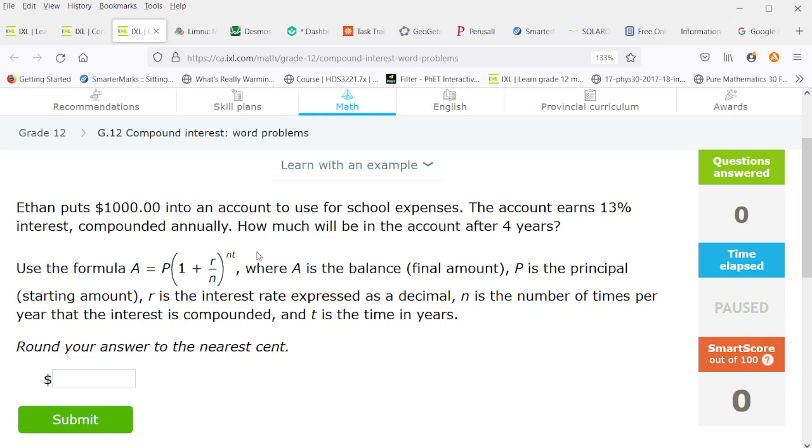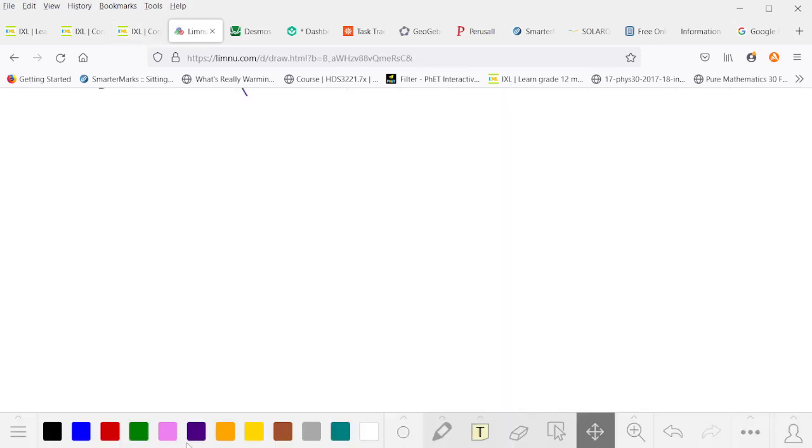So Ethan puts a thousand dollars into an account to use for school expenses. The account earns 13% interest compounded annually. How much will be in the account after four years? If you use this formula, let's break it down. The amount is the principal times one plus the interest rate over the number of compound periods per year, exponent number of compound periods per year times the number of years.